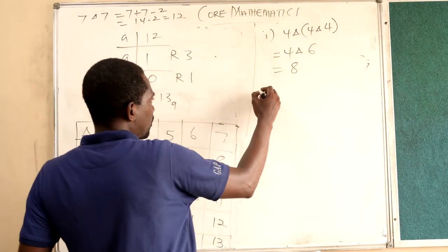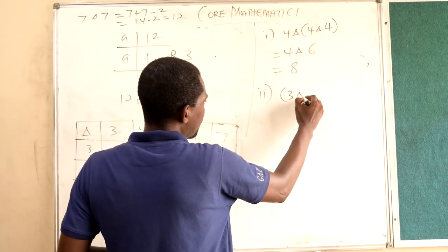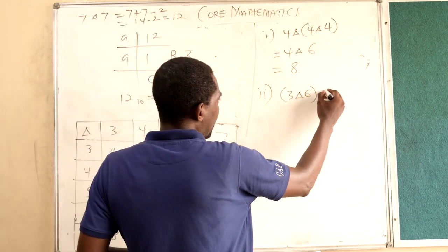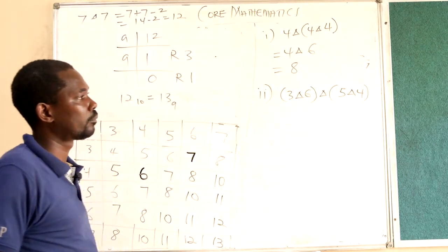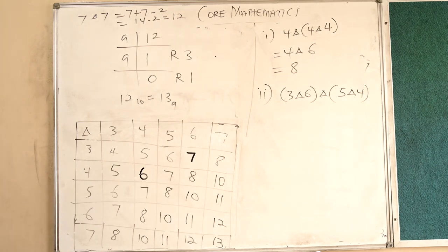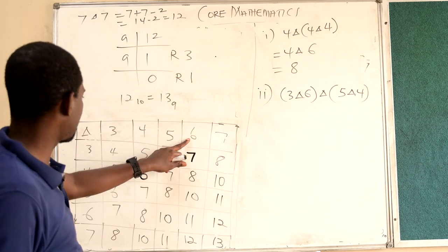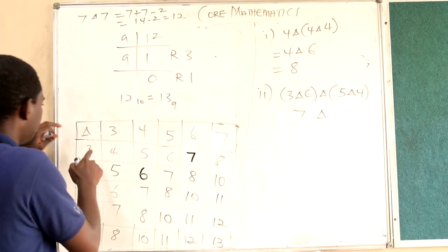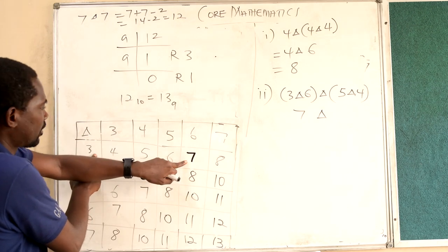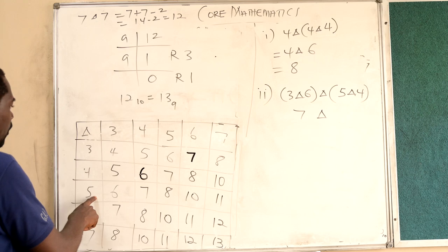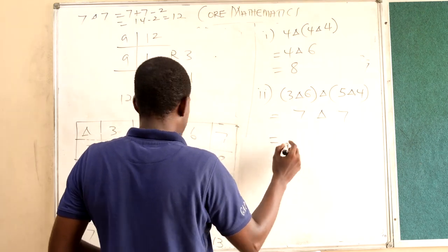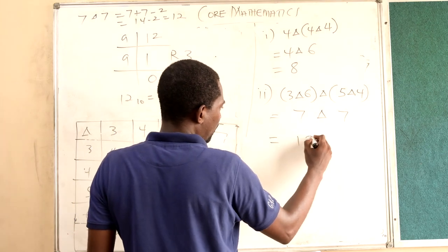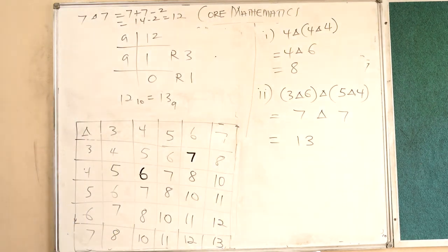The next question is (3 triangle 6) triangle (5 triangle 4). I can do both brackets at the same time. 3 triangle 6 is 7, and 5 triangle 4 is also 7. So this becomes 7 triangle 7, which is 1 3. So that one is done.